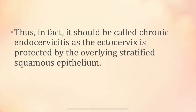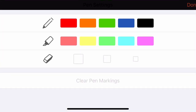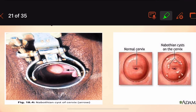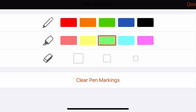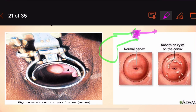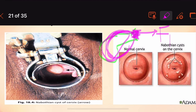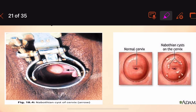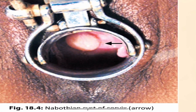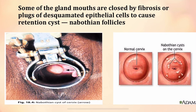Some gland mouths are closed by fibrosis or plugs of desquamated epithelial cells, resulting in Nabothian cysts. The gland opening into the cervix becomes blocked — either by scar formation or desquamated epithelial cells — causing fluid accumulation and cyst formation. These are known as Nabothian follicles or Nabothian cysts of the cervix.